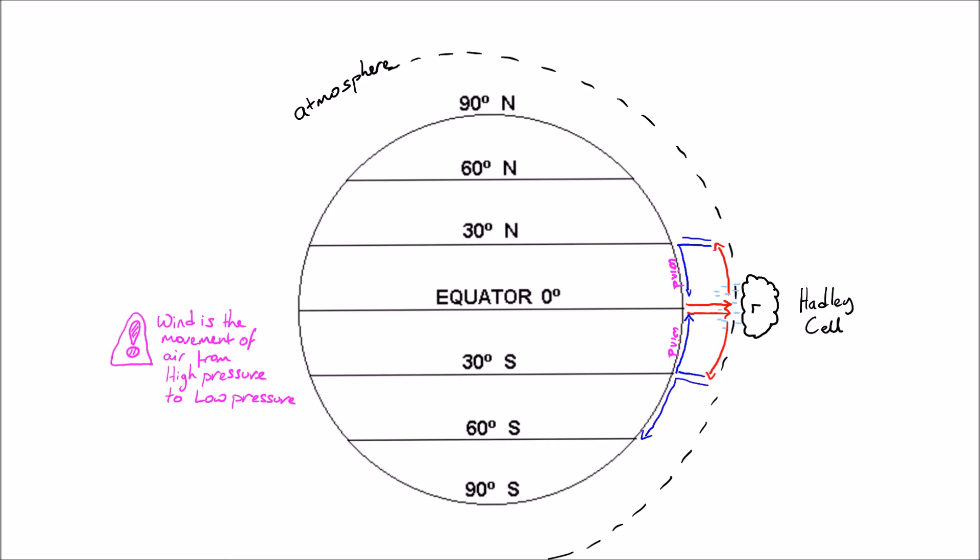Now some of that air that descends around the 30 degrees north and south of the equator in these areas of high pressure also spreads north and south.